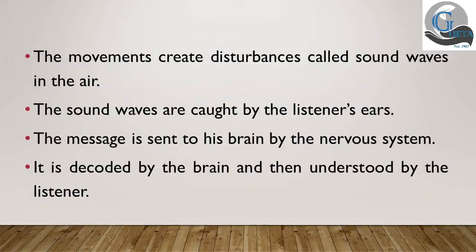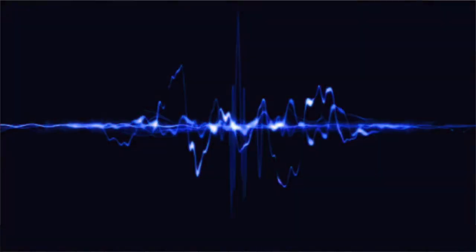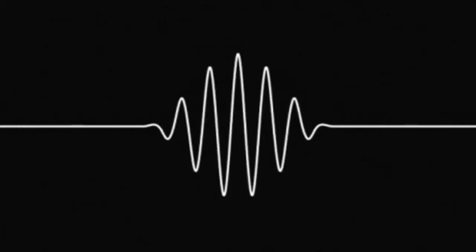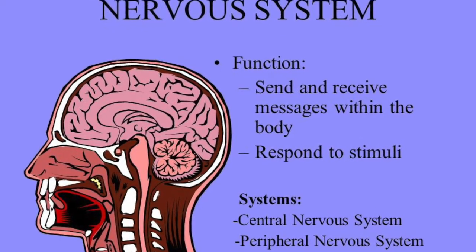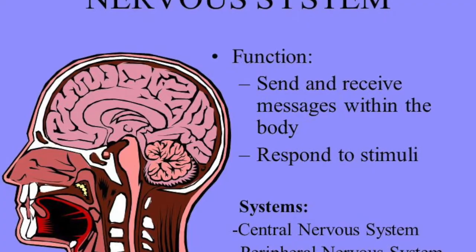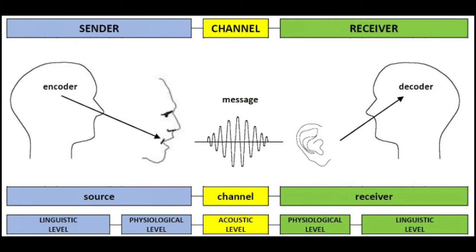Speech is meant to be heard by someone. The movements of the speech organs create disturbances in the air, which are called sound waves. These sound waves are caught by the listener's ears. The nervous system sends the message to the brain and the message is linguistically decoded by the brain, and the listener understands the meaning. The condition is that the speaker and the listener should share the same linguistic code — both should be communicating in the same language.